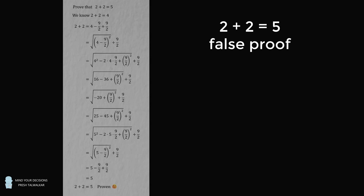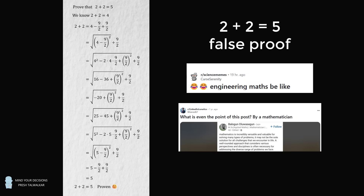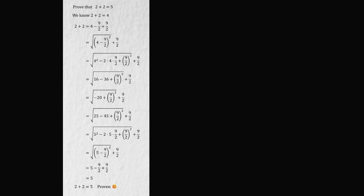Hey, this is Presh Talwalker. You may have seen a false proof that 2 plus 2 is equal to 5. Many people have asked me to cover this question because it's circulating on a lot of sites and there is a lot of confusion about it. Where is the mistake?